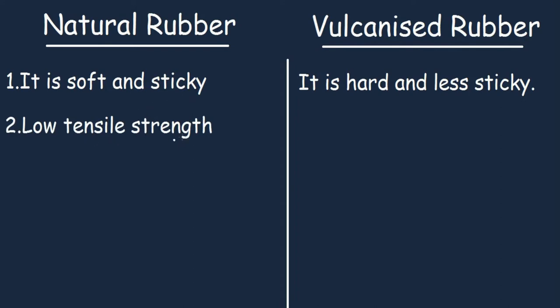Natural rubber has low tensile strength, while vulcanized rubber has a high tensile strength.